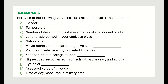Example six: determine the level of measurement for each variable — identifying it as nominal, ordinal, interval, or ratio. Gender does not involve any number, so that is nominal. Temperature has numbers but zero is not a true zero, so temperature is interval. Number of days during the past week that a college student studied involves a count where zero makes sense, so that is ratio.